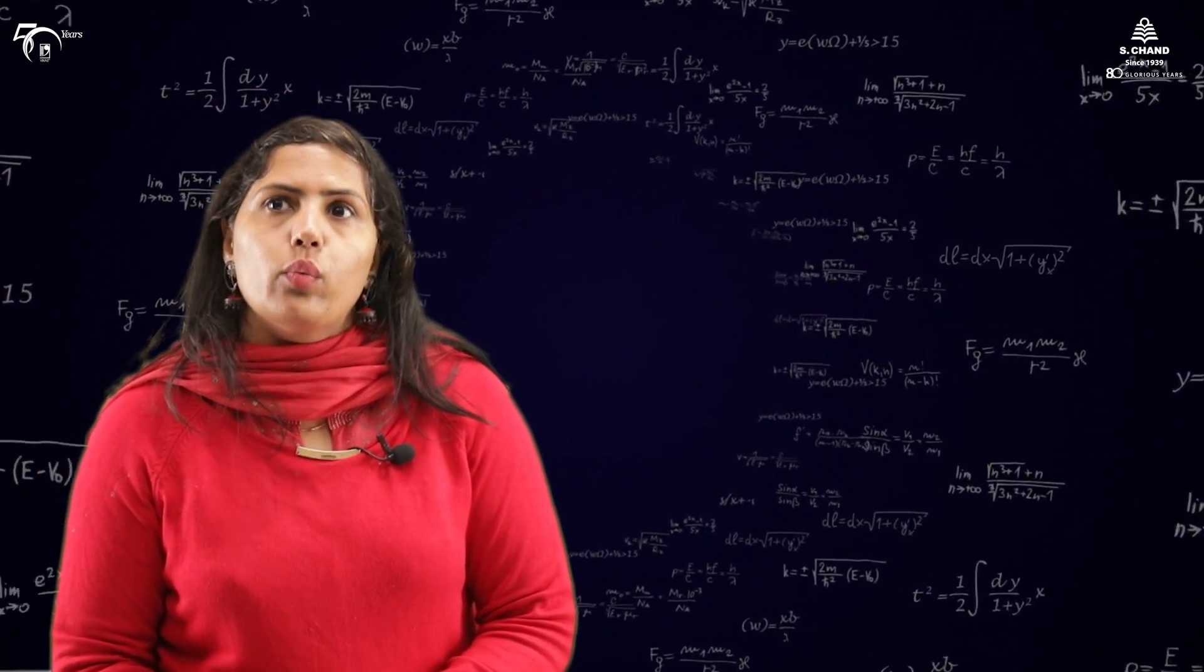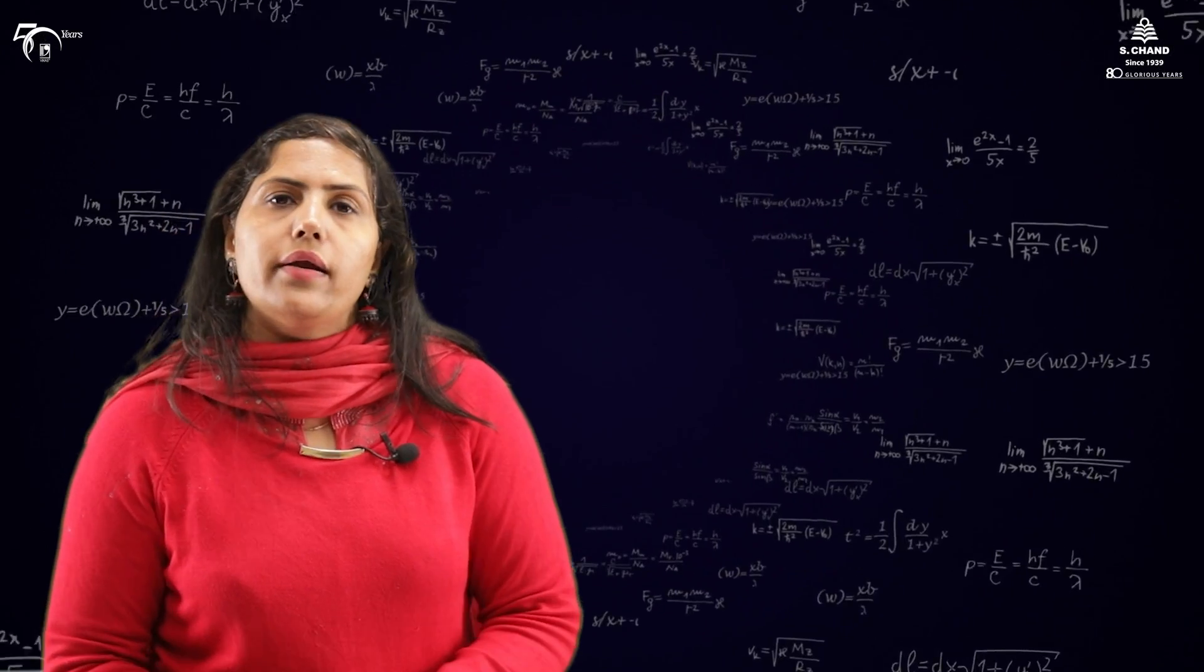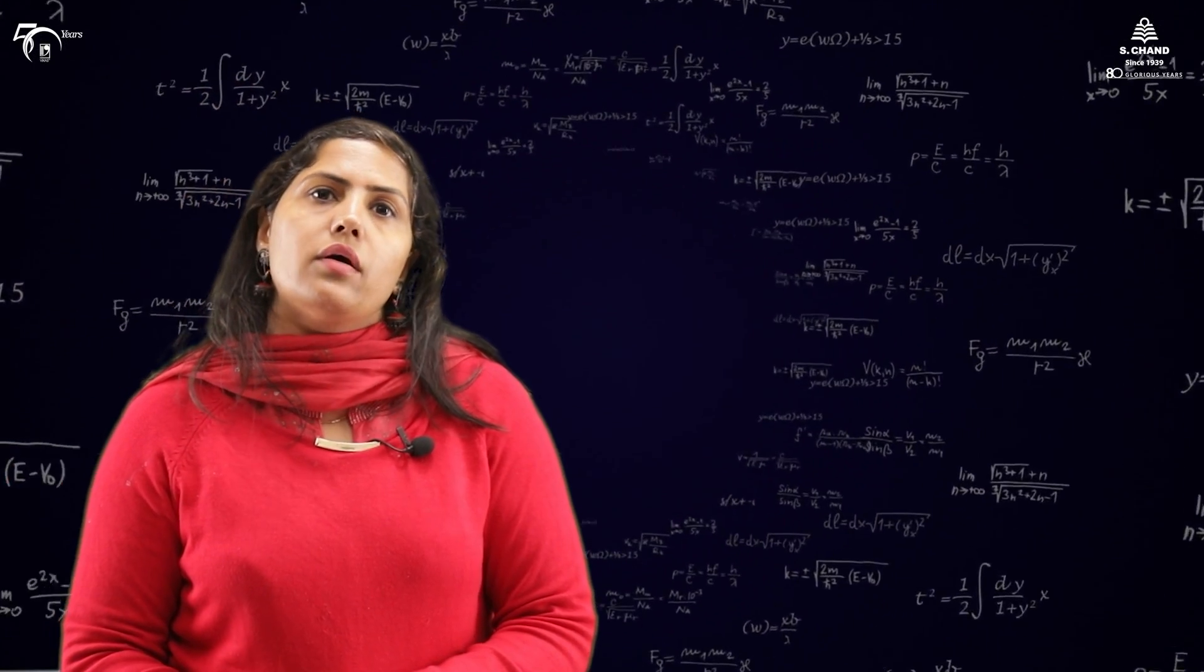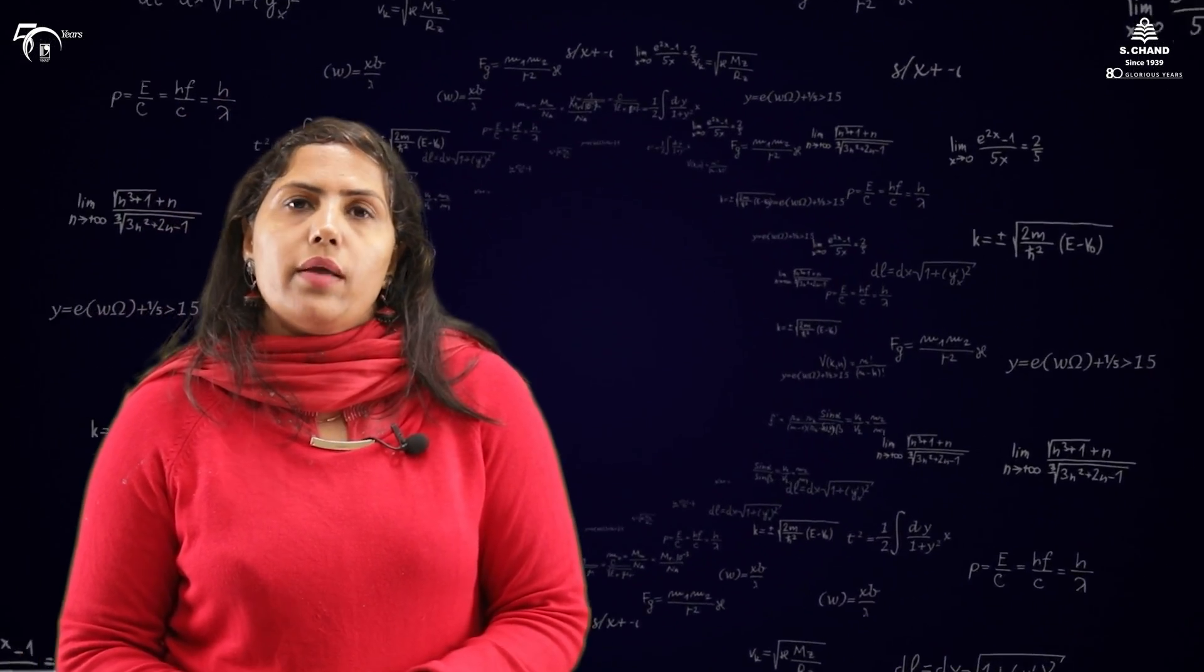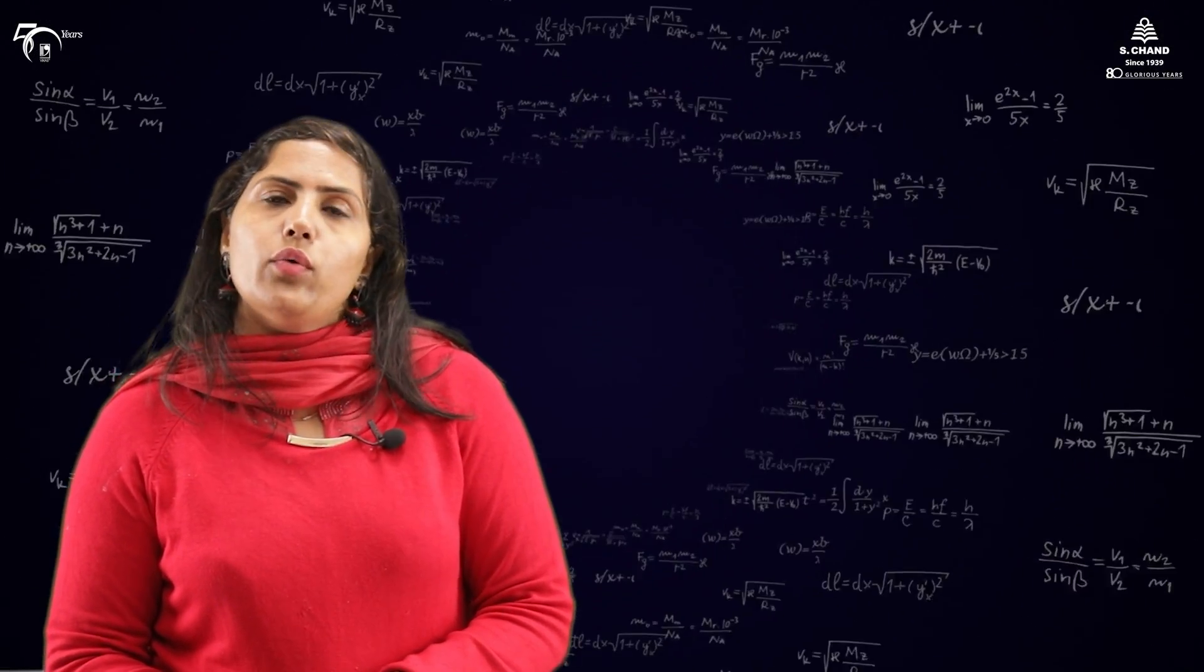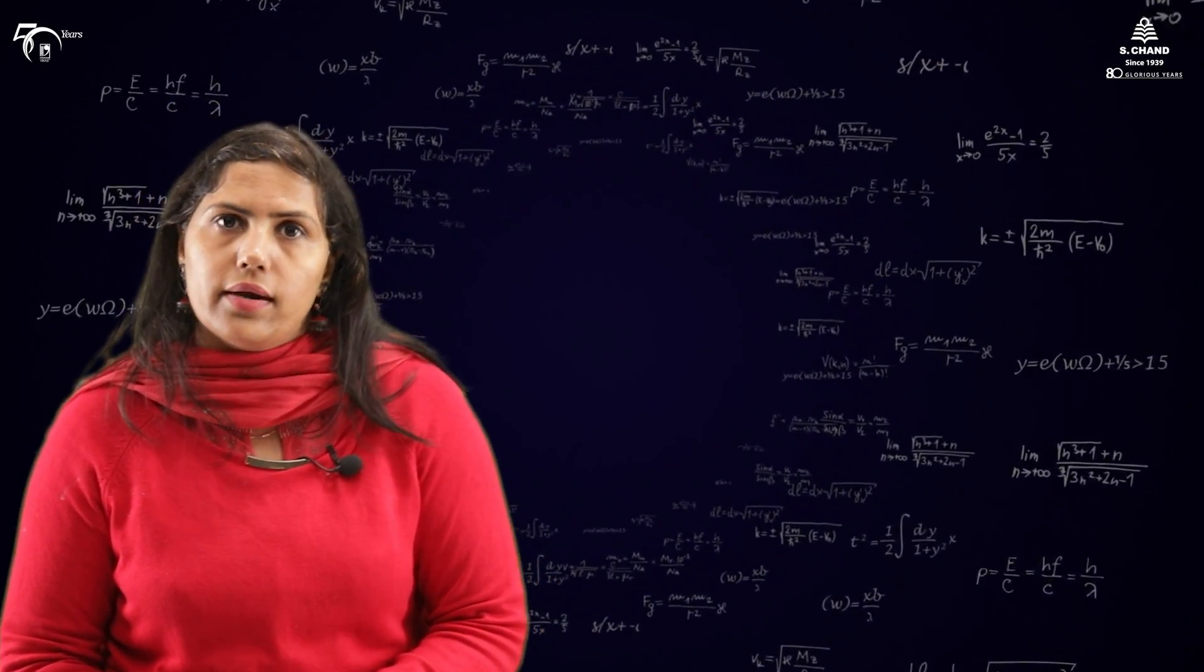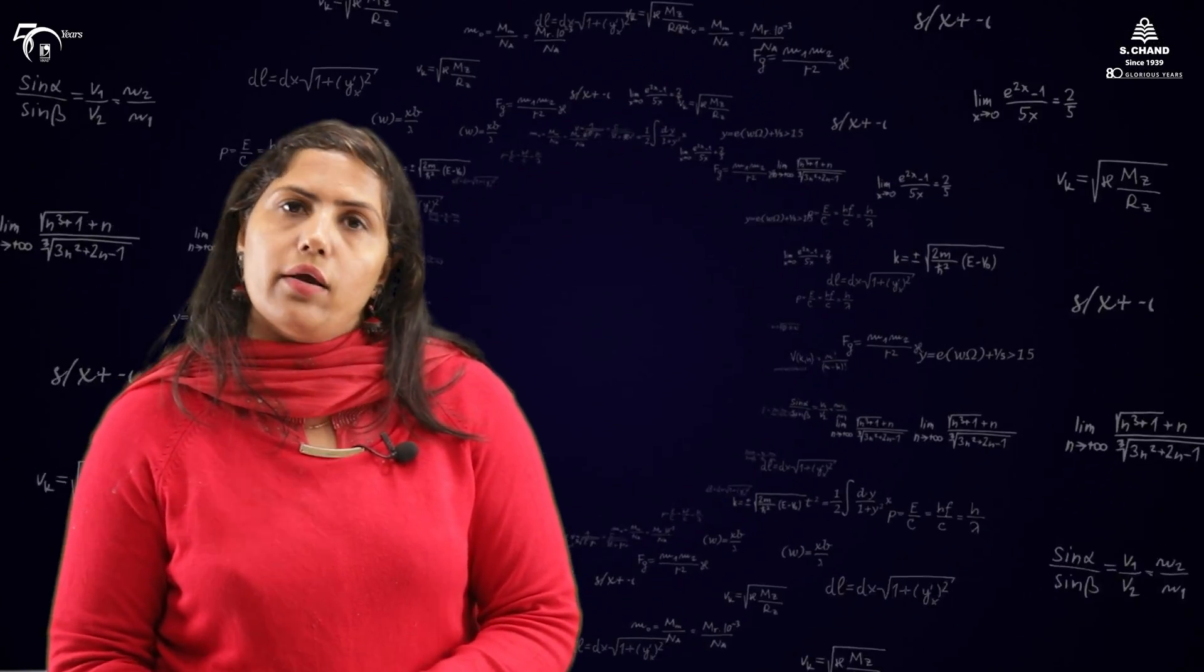This is the end of part 2. We did examples on rank. One example I did on the basis of minor. That method is not applicable to problems where the order of the matrix is high. And we discussed the very important and simple method, that is upper triangular method. Below diagonal we make elements 0 and then we see how many non-zero rows we are getting. The number of non-zero rows equals the rank of the matrix.